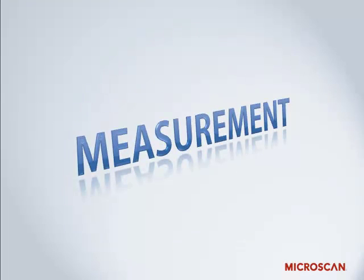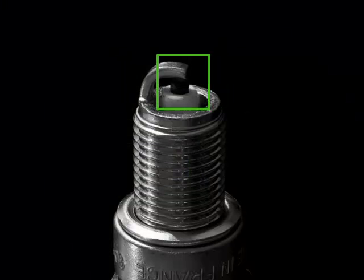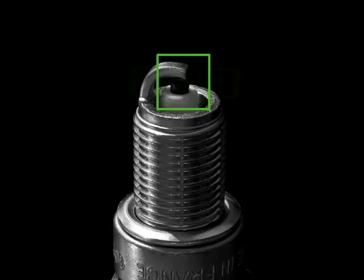Since its start, machine vision has been widely used for measurement — the automated measurement by a machine — which can then be checked to a specified tolerance. For example, something we've been doing for years with machine vision is measuring the gap in spark plugs. This gap needs to be a certain width or the car won't run as well, making it an extremely critical spec for the part. We can use a camera to measure the spark plug gap by machine, eliminating the need for a person to measure and adjust the gap manually. We can automate the process and do it more quickly and accurately.